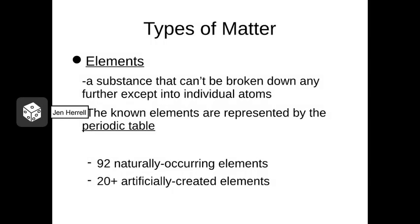There are many different types of matter that are known to exist, and each of these is referred to as an element. Elements are represented on the periodic table by those squares. Each one has its own square and its own symbol. There are 92 naturally occurring elements that are known, and 20 plus that have been artificially created in the lab — every year they discover new ones and add them to the periodic table.